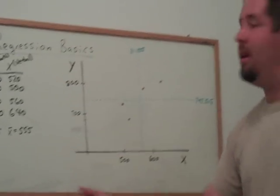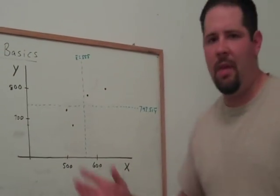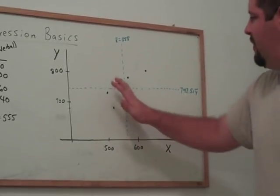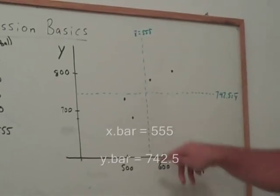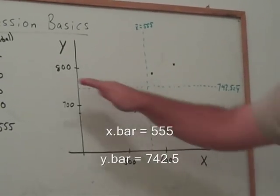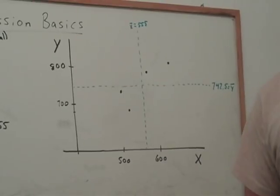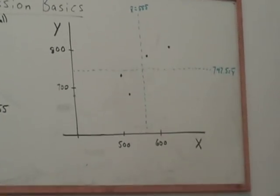Anyway, I took the liberty of graphing these, this may not be the scale, so bear with me, but these four points are graphed on here. And I went ahead and graphed x bar and y bar, the mean of x and the mean of y, on this graph.